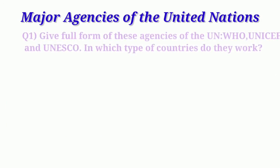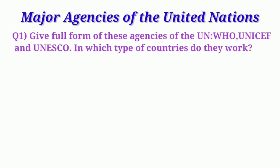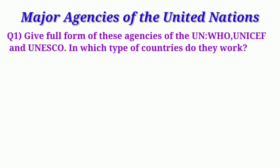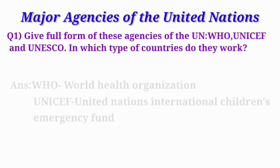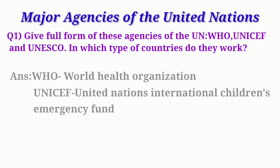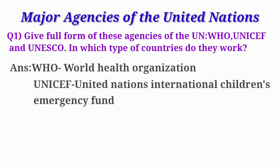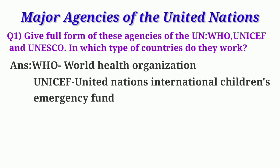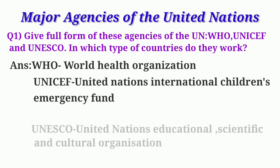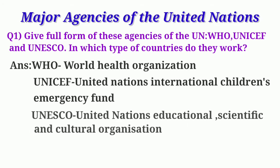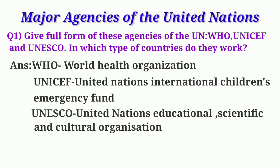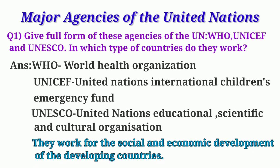Question 1: Give the full form of these agencies of the UN — WHO, UNICEF, and UNESCO — and in which type of countries do they work? WHO is World Health Organization. UNICEF is United Nations International Children's Emergency Fund, although it has been renamed as United Nations Children's Fund, but the acronym UNICEF continues to be used. UNESCO is United Nations Educational, Scientific and Cultural Organization. These organizations work for the social and economic development of the developing countries.